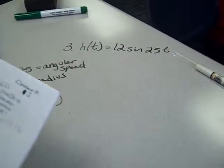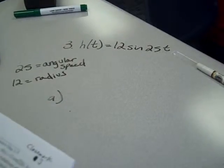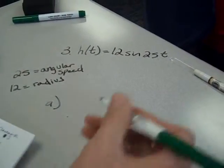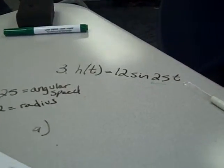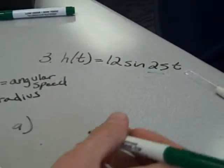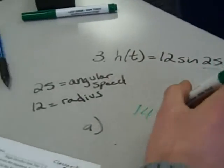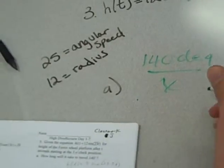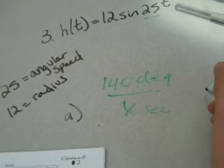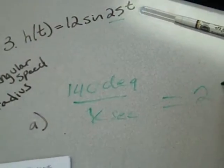3A asks how long will it take to travel 140 degrees? We know that the angular speed is 25 degrees per second and we want to find how many seconds it takes. So we take 140 degrees divided by X, which is how many seconds we're trying to find, equals our 25 degrees per second.